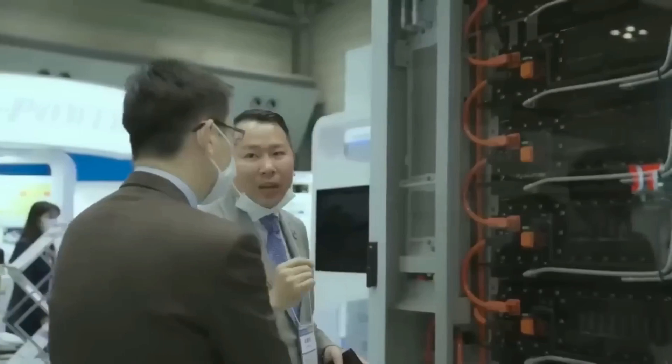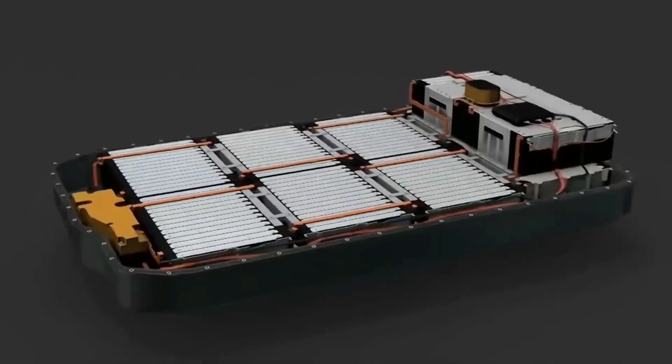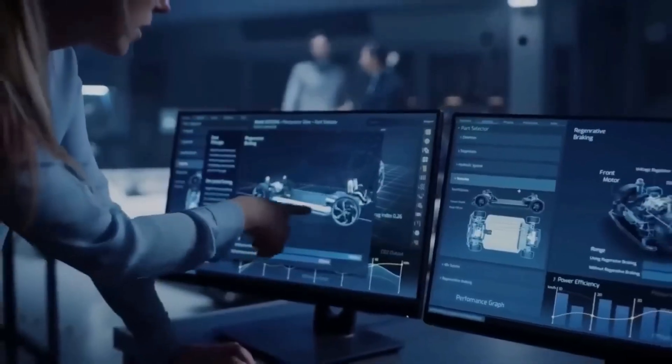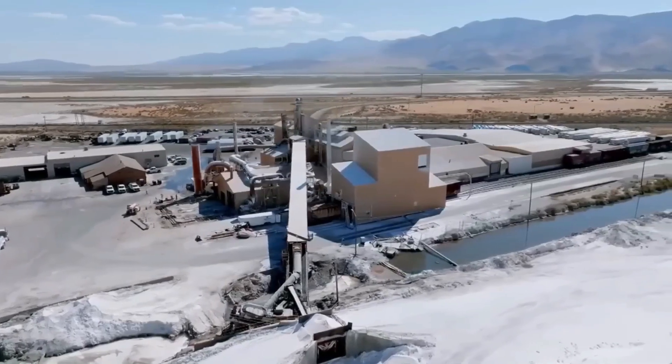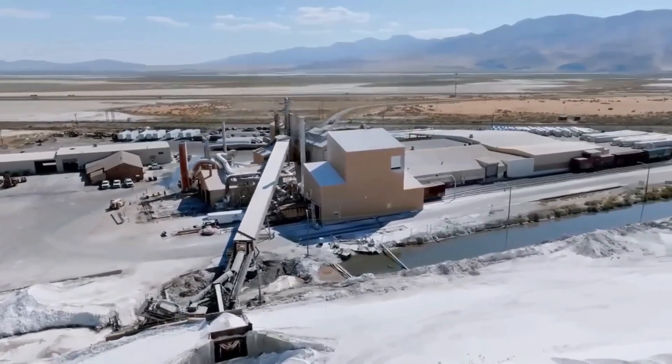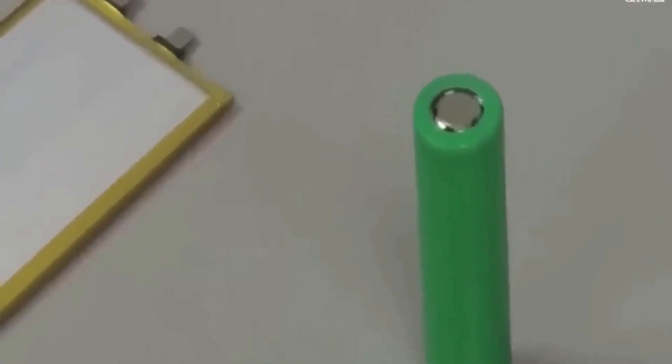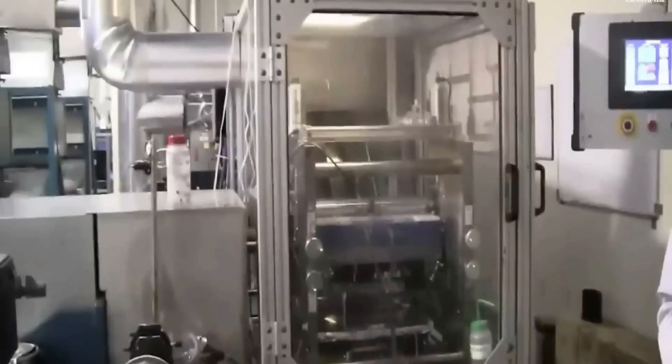Moreover, the use of sulfur could alleviate some of the ethical concerns surrounding cobalt mining as sulfur is abundant and its sourcing is not associated with the same human rights issues. Cobalt scarcity is one of the challenges faced by current lithium-ion batteries and replacing it with sulfur could improve the sustainability of battery production.